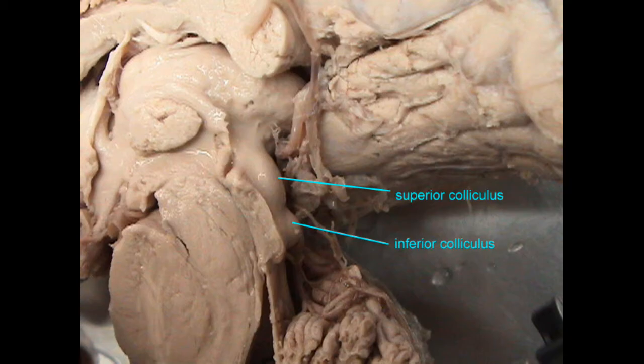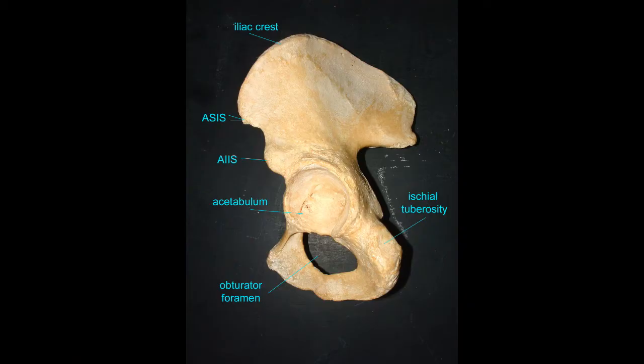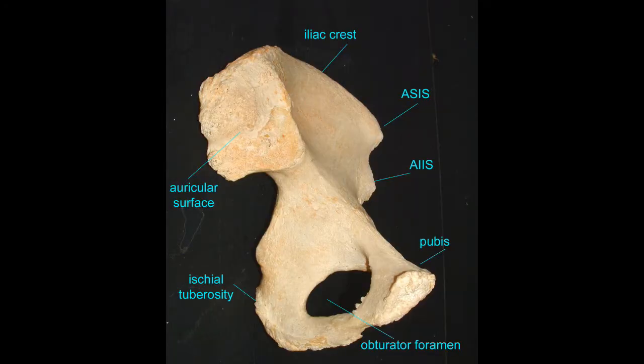In the hip, there are two bumps on the forward-facing side of the hip bone, the ilium. They are called the ASIS and AIIS — the anterior superior iliac spine and the anterior inferior iliac spine.